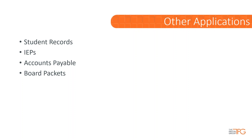IEPs are another great use of FileBound for storage, retrieval, workflow, e-forms, and most importantly security. Leveraging FileBound, IEPs can be stored in FileBound and then sent to an IEP workflow where participants can see stored documents, create new documents through the e-forms module, and share those forms out to the team — all the while knowing that those documents are fully secured so only those individuals on the team can see them.